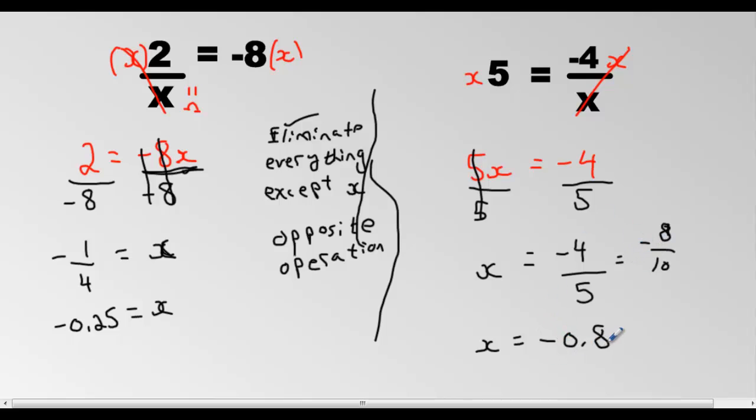And then you can substitute that value back in here. In your calculator, type negative 4 divided by this number, negative 0.8. And you will get 5.